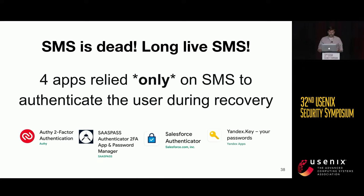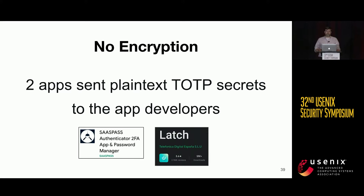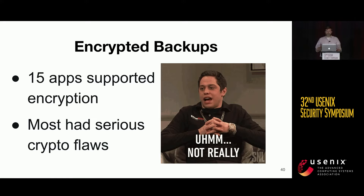There were four apps that relied solely on SMS to authenticate the user during the recovery process. This means an attacker with control of the victim's phone number — potentially through a simple SIM swap attack — would be able to access that TOTP backup. SASPASS is one of these apps, and unfortunately SASPASS was also one of the two apps that sent plain-text backups, including the secrets, to the app developers.